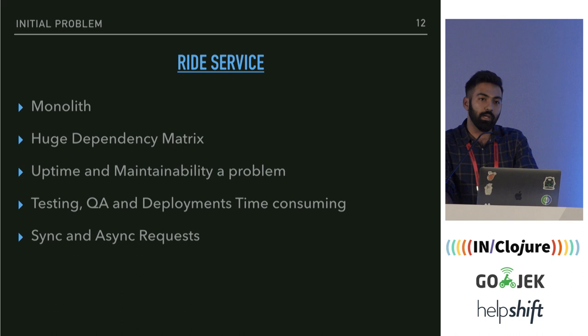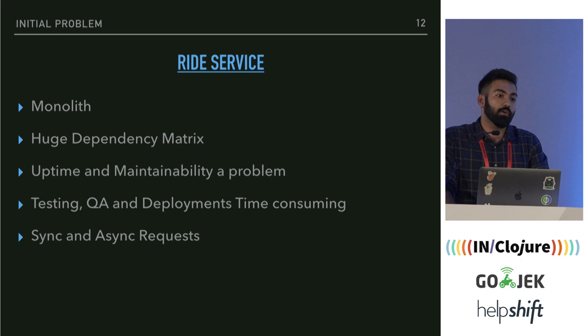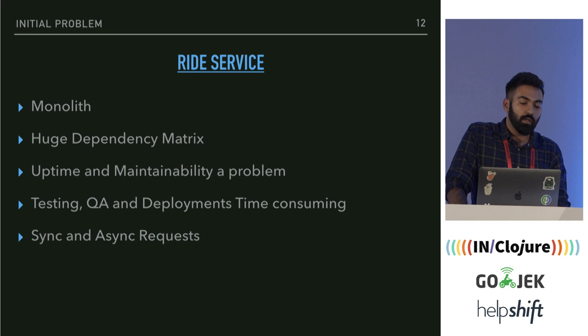Uptime and maintainability were a problem. Every time the load on Gojek increased, Ride Service would generally buckle — not because of its own problems but because one of its dependencies failed. Testing, QA, and deployments were also time-consuming since it was a huge application. There were a lot of sync and async requests that could be pulled out of Ride Service.